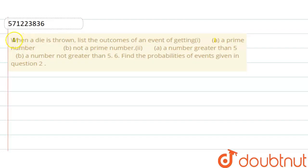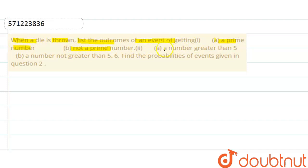Hello friends. The question is: when a dice is thrown, list the outcomes of an event of getting — A: a prime number, B: not a prime number. Then in the second part, A: a number greater than 5, and B: a number not greater than 5.